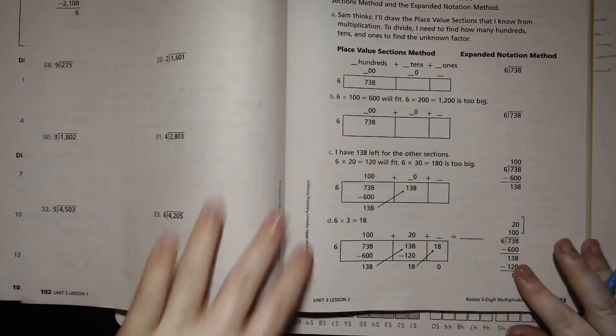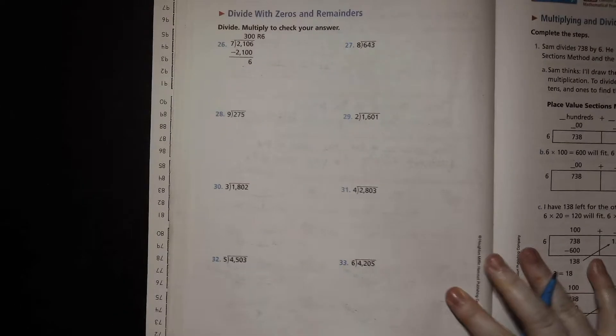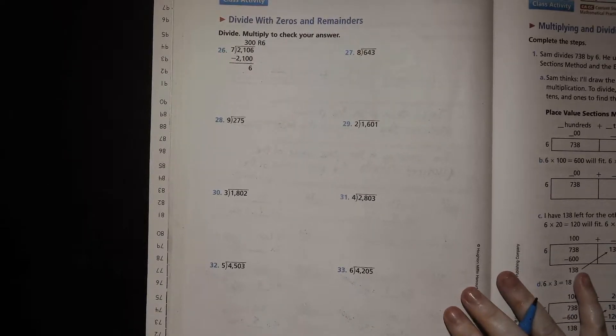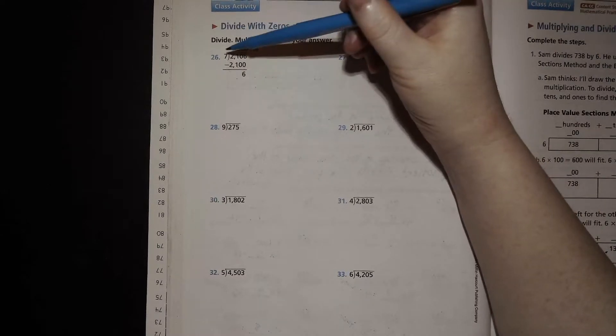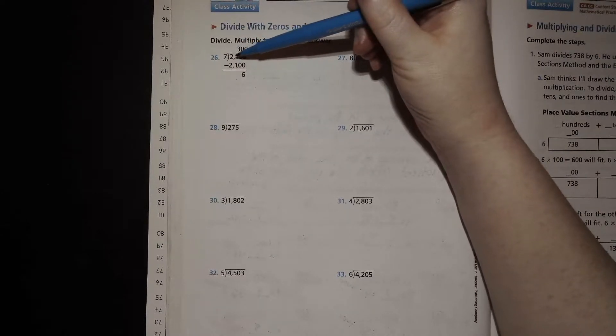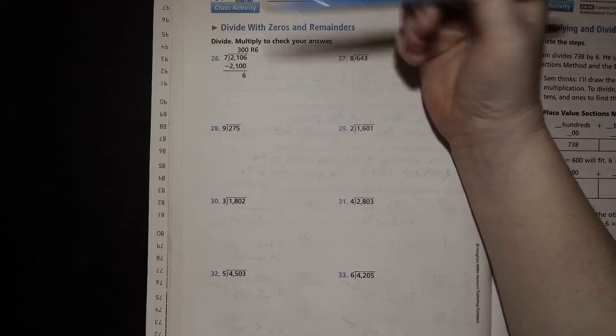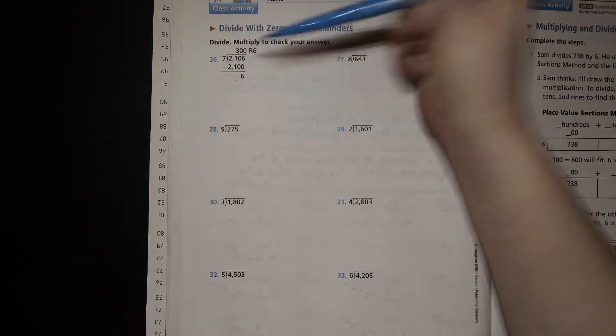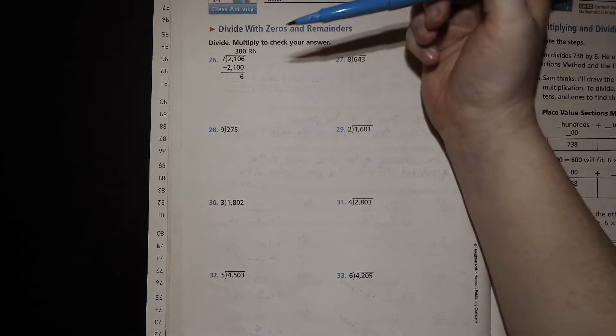Okay. Turn that page. And here we go. Now we're going to take that same idea. And we're going to have remainders involved. And it's not anything crazy. We just did it. So let's look at our example. So 7 goes into 2,106. How many times? Well, we did 300 for the 2,100. And we subtracted, found that difference. And now we have 6 as the remainder.